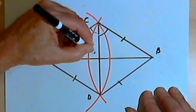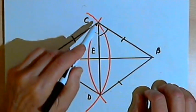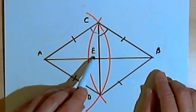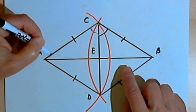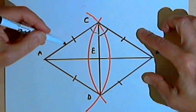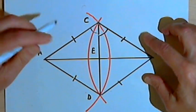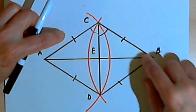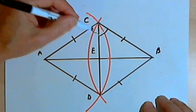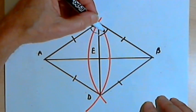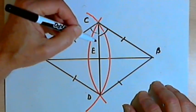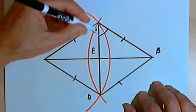Now I'm going to label the place where CD bisects AB as point E. Let's look at another pair of triangles: ACE and BCE. These triangles are congruent because they have side AC congruent to side BC, angle ACE congruent to angle BCE, and side CE shared by both triangles. So their congruence is side-angle-side.